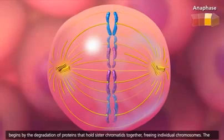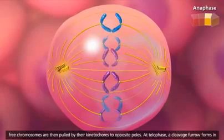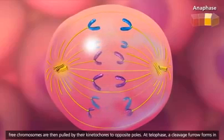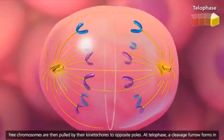Anaphase begins with the degradation of proteins that hold sister chromatids together, freeing individual chromosomes. The free chromosomes are then pulled by their kinetochores to opposite poles.